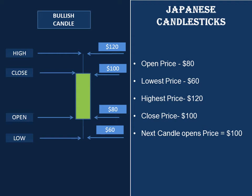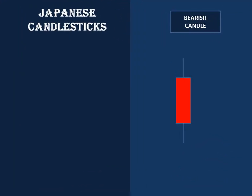The next candle will open at $100 because that is where the previous candle left off. The previous close of a candle becomes the open for the next candle — it is a continuation. That is how it works.